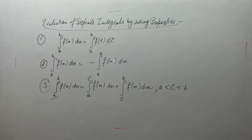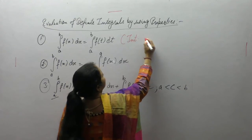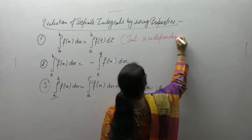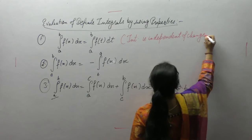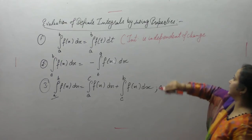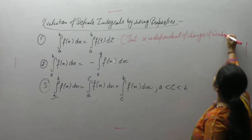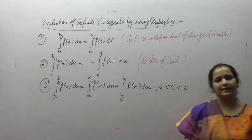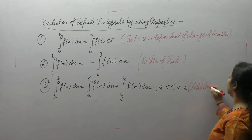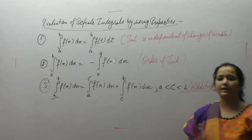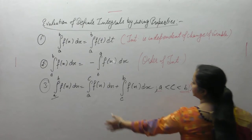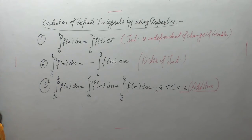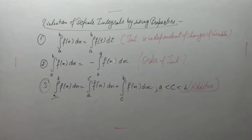So to summarize: the first property is that integration is independent of change of variable — if the variable changes but limits remain the same, the integration value does not change. The second is that reversing the order of integration introduces a negative sign. The third is the additive property — if a value c lies between the lower and upper limits, we can split the integral into a-to-c plus c-to-b. Note down these properties. There are some more properties, but first let's use these to find integrals.